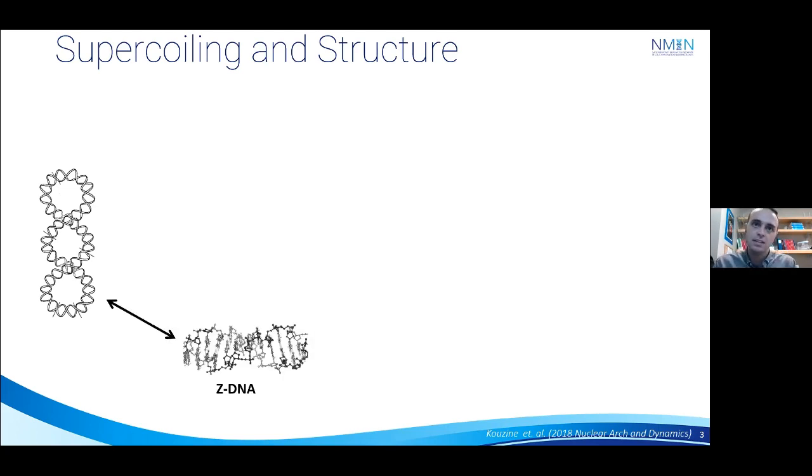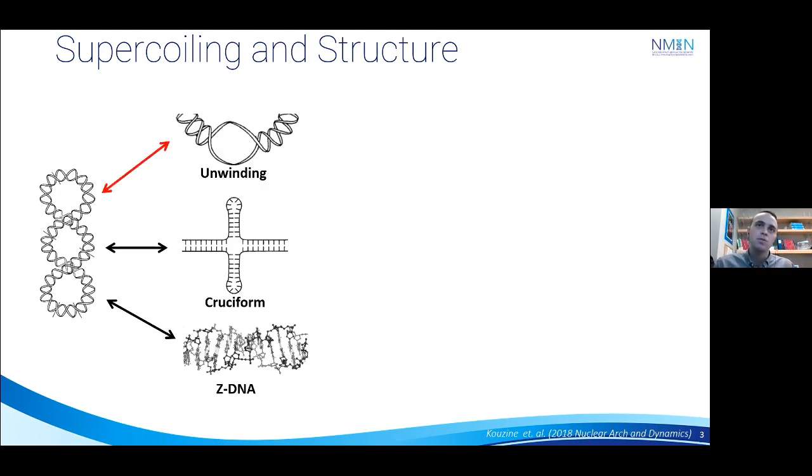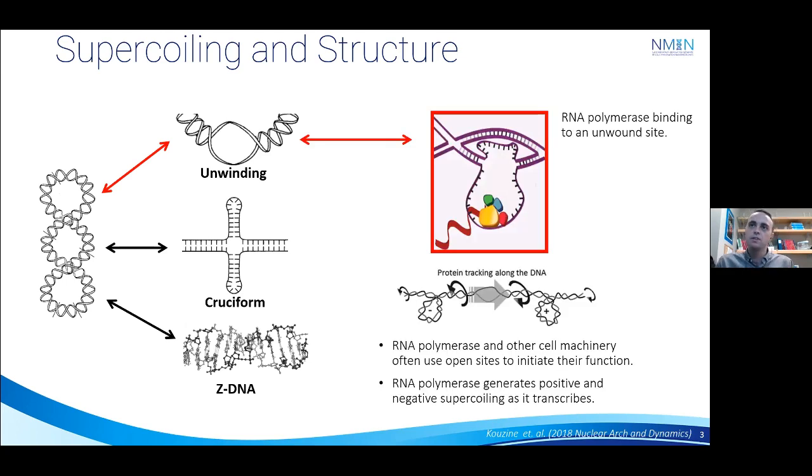For example, you can get things like Z-DNA, cruciform formation, and for the sake of this talk, we'll be focusing on unwinding sites, which is when you have localized melting, giving rise to these single stranded regions. And so why do we care about this structure? Well, it turns out that various enzymes within the cell can use this unwinding as an initiation site to start their function.